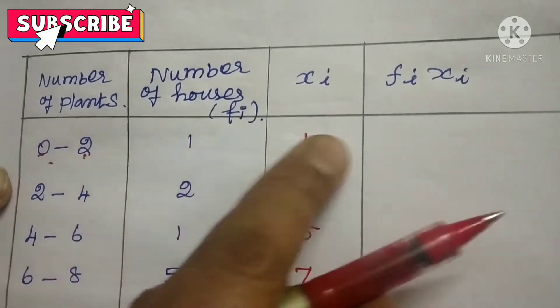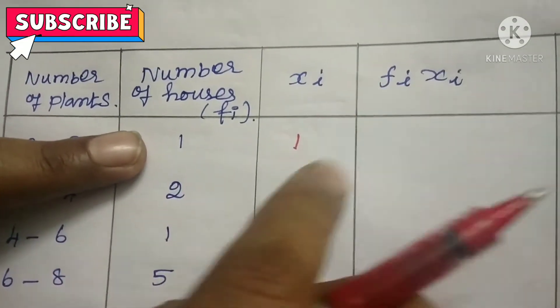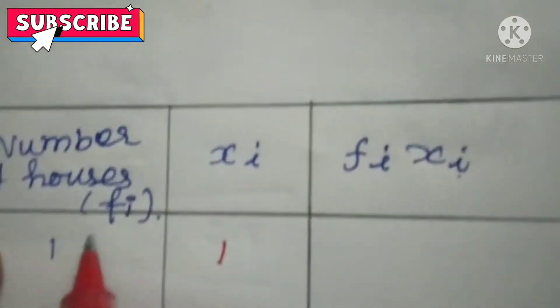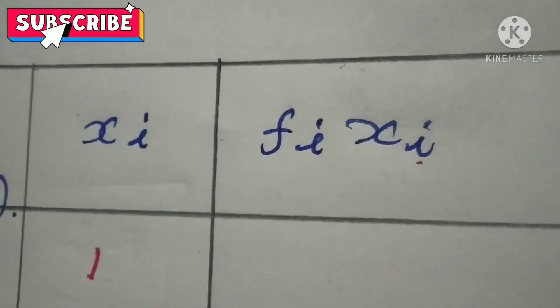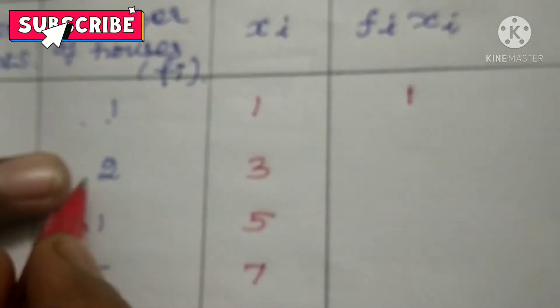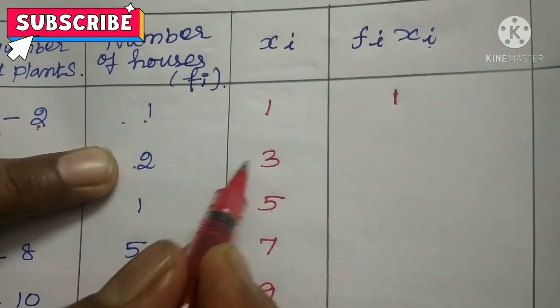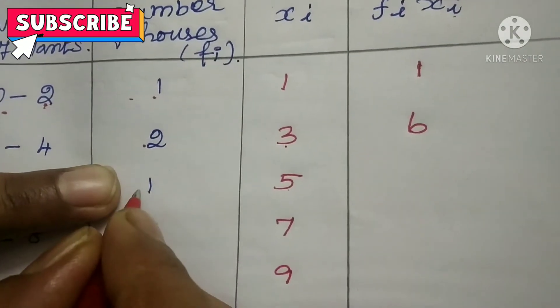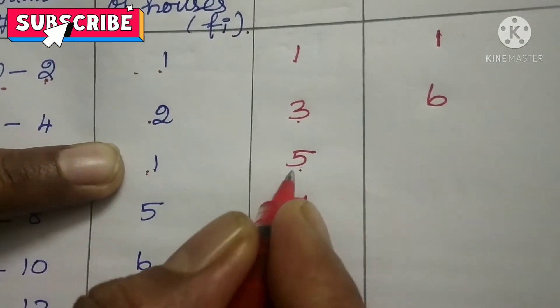0 to 2, then 1, then 1. So next Fi Xi. What is Fi Xi means? F1 X1. Therefore F1 X1, that is 1 into 1, that is equal to 1. Then 2 into 3, that is equal to 6. F2 X2. Then F3 X3, it is 1 into 5.